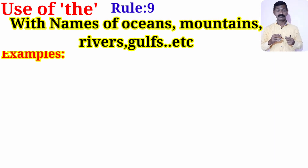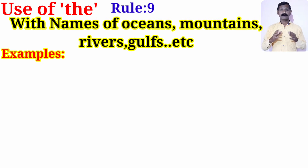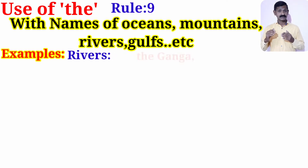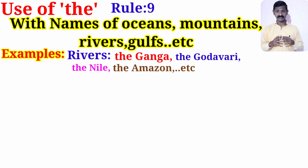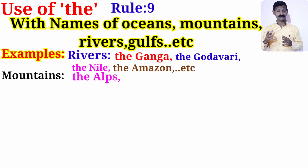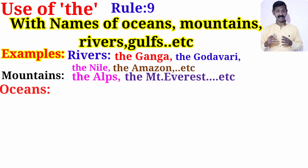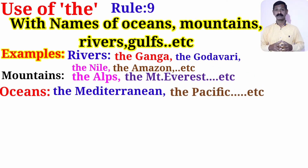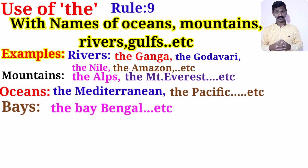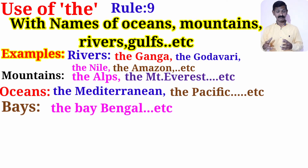We use article 'the' with the names of rivers — for example: the Ganga, the Godavari, the Nile, the Amazon. In the case of mountains: the Alps, the Mount Everest. For oceans: the Mediterranean, the Pacific. And for bays: the Bay of Bengal, the Gulf of Mannar.